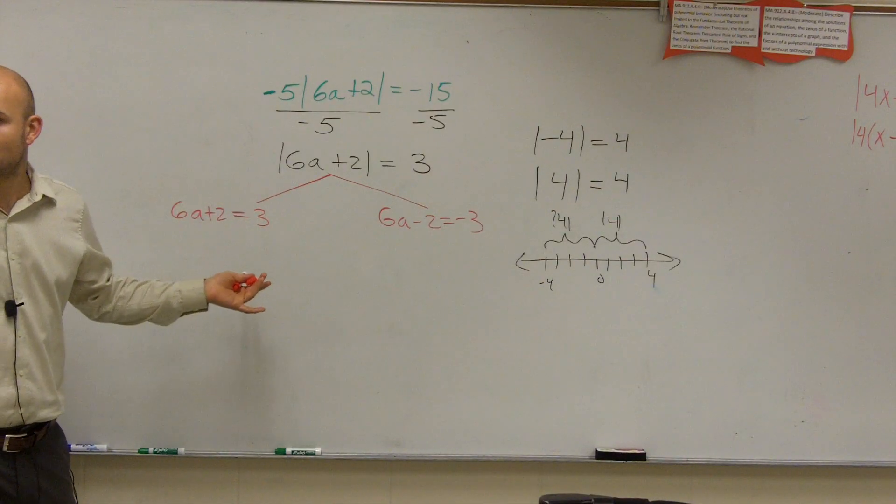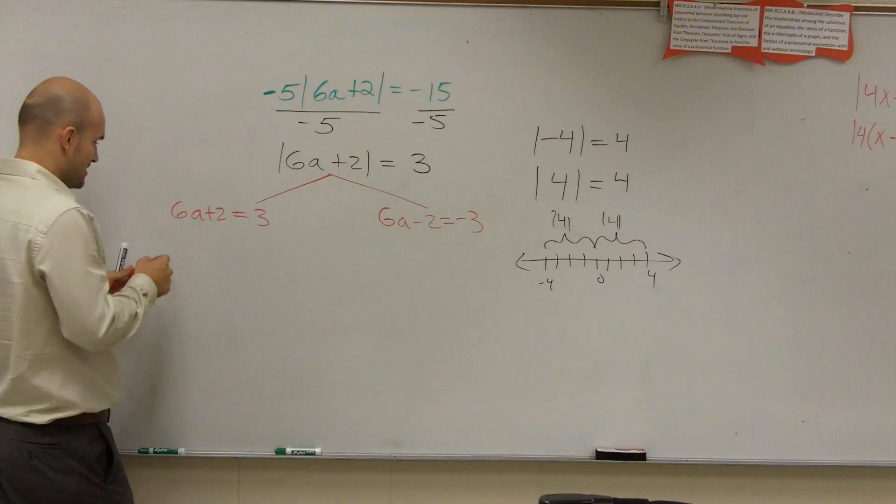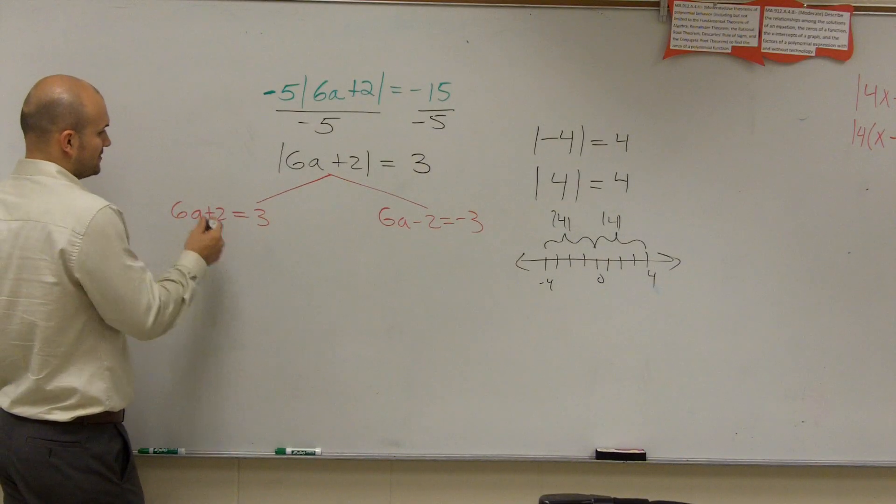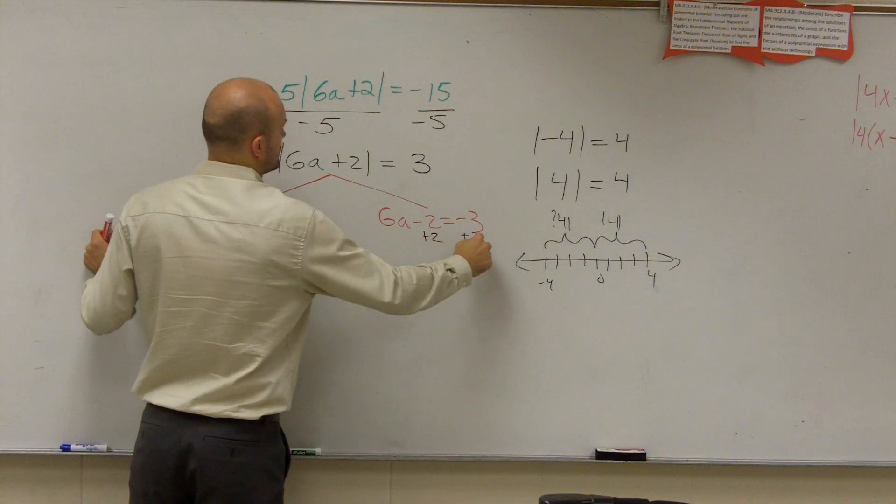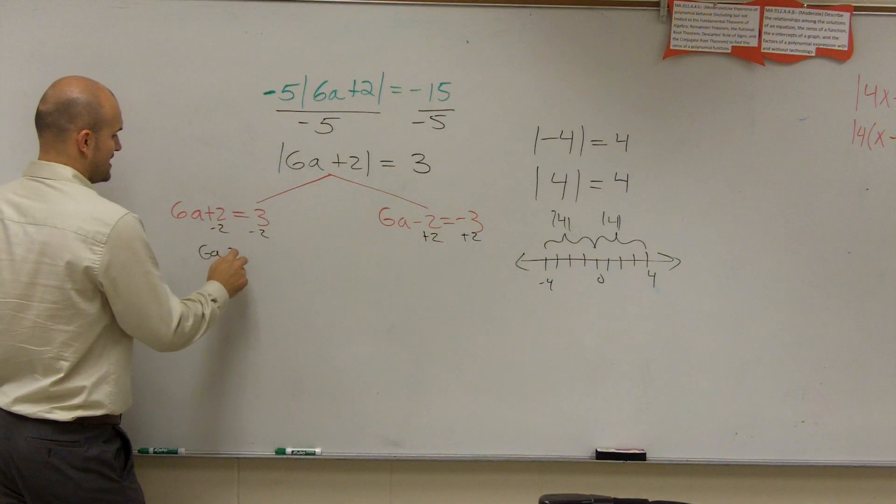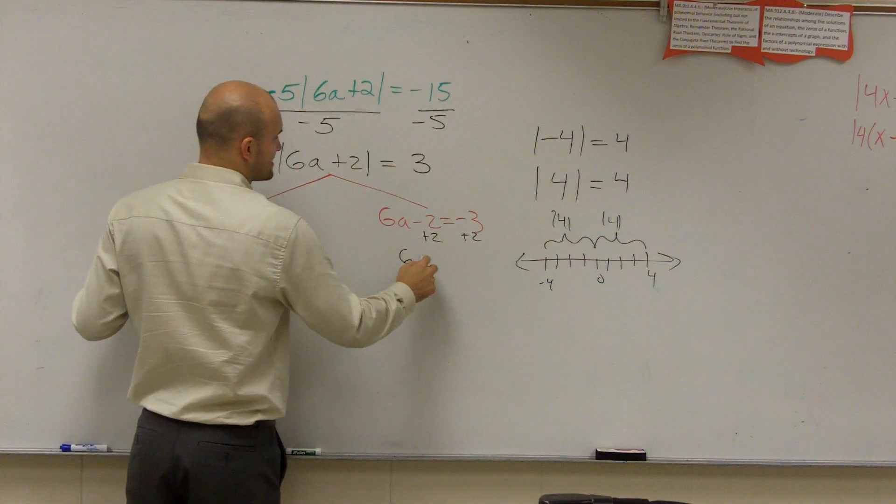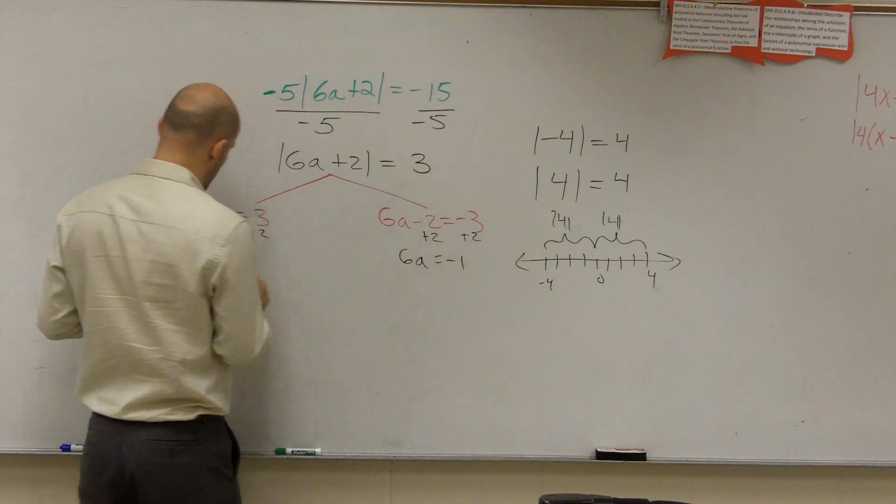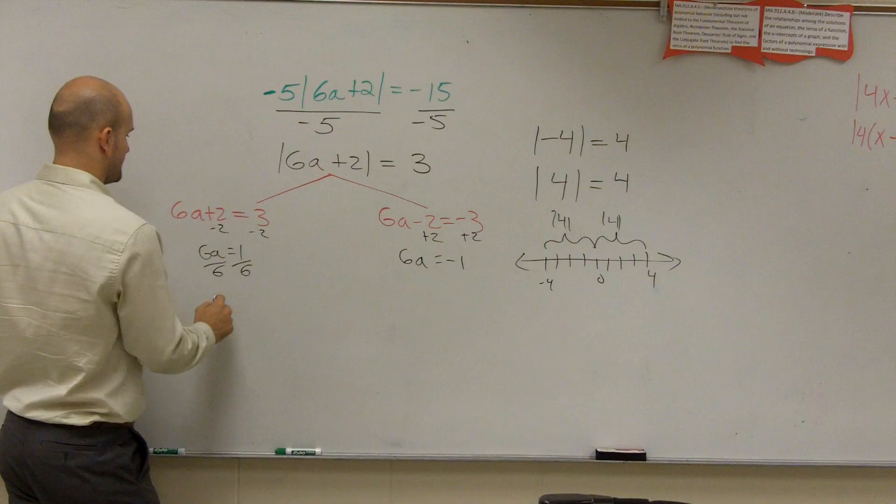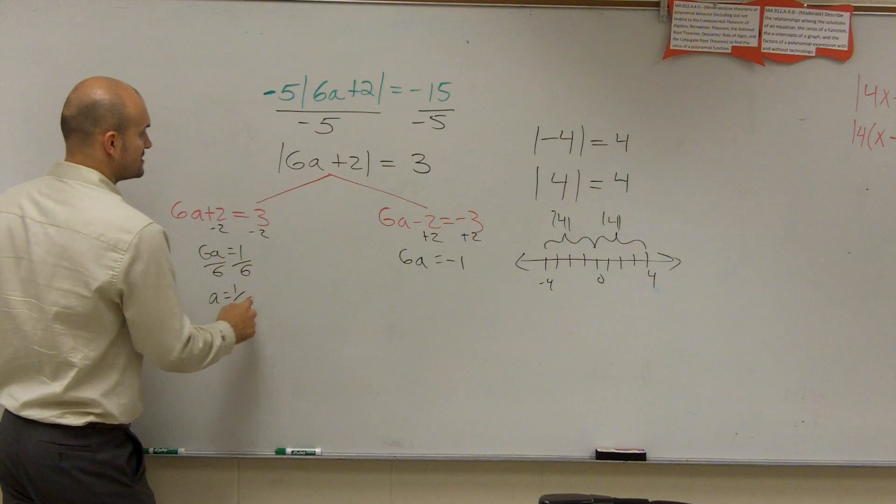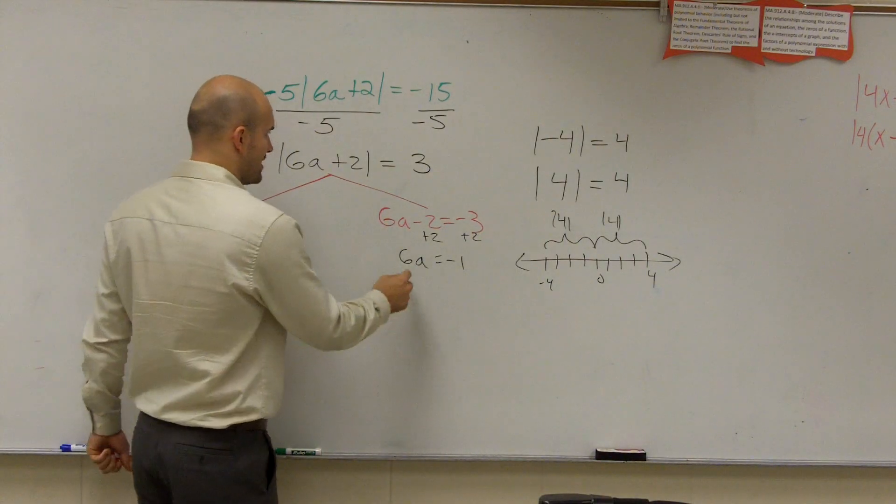So now, ladies and gentlemen, we have two-step equations. This ain't bad, we can solve this stuff. So to solve here, subtract the 2, so I get 6a equals 1. Here I get 6a equals negative 1. Divide by 6, a equals 1 over 6.